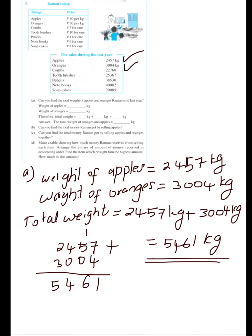5461 kg will be the answer for this question. The total weight of apples and oranges that Ramen sold last year equals 5461 kg. Write it in a full sentence in this way.